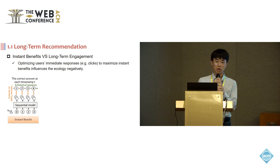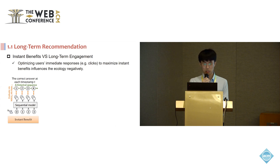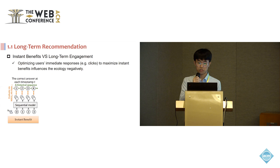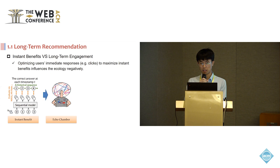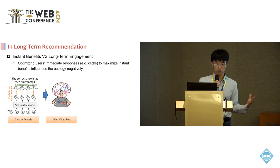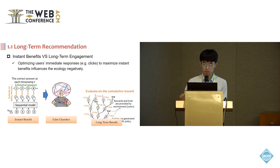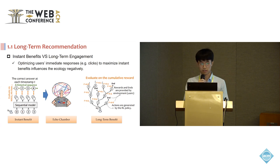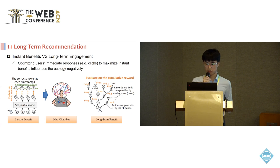Let's take the sequential recommendation setting as an example. It takes the trajectory history as input and tries to recommend the most relevant item to users. However, in such a case, some users may be trapped in filter bubbles or echo chambers, which will negatively influence the ecosystem. So we argue we should focus more on long-term recommendation, taking the whole trajectory into consideration and maximizing long-term cumulative rewards.